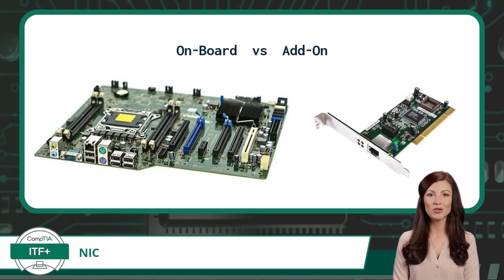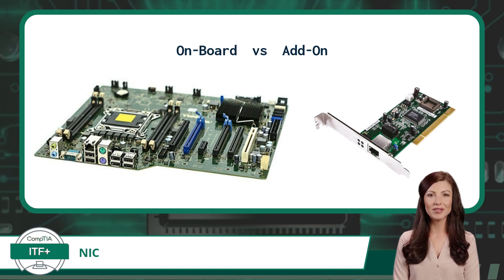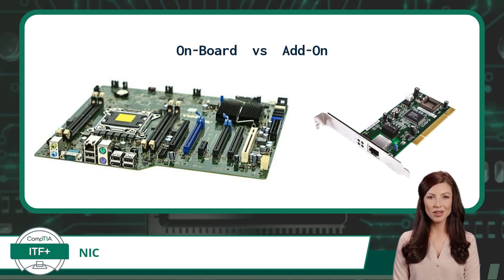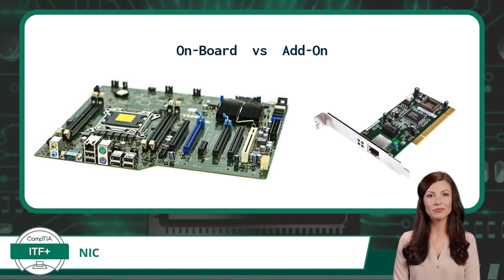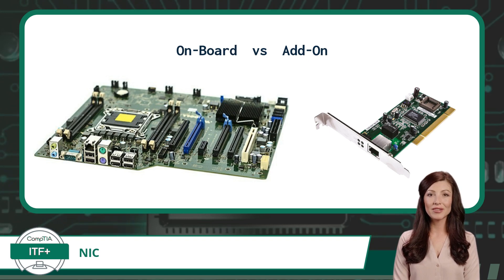You can also classify NICs into two more groups. They can be integrated into the motherboard of a computer — we refer to these as onboard NICs — or they can be added as a separate expansion card or add-on card. An integrated NIC is built directly into the motherboard and does not require any additional installation. This may seem like a benefit, but it does pose some restrictions as we lose the ability to upgrade in the future. Add-on NICs, however, can be easily replaced or upgraded. If you want to change or upgrade your network connection, you can simply remove the existing add-on NIC and install a new one.